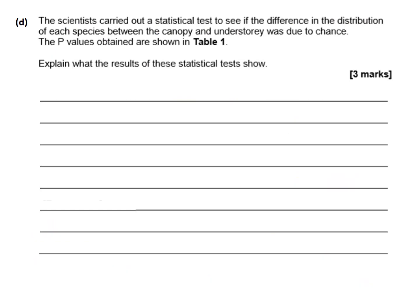Question d says the scientist carried out a statistical test to see if the difference in the distribution of each species between the canopy (data set 1) and the understory (data set 2) was due to chance. The statistical test is the t-test, which allows us to compare two mean values from two data sets to see if they're significantly different. The p-values are already calculated and given in the table.